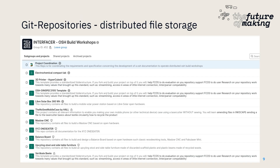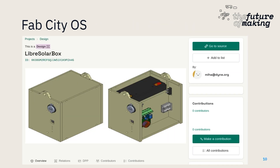Everything is open and accessible. We have a list of repositories where all the designs are placed — still in development but it's there. We also used a file structure standard developed during the Interfacer project to see how we can apply it. In the first phase, we also integrated it into Fab City OS so we have one project we can integrate there, making it more easily accessible since the Git environment comes from software development and not everyone is a developer.